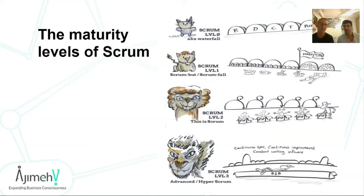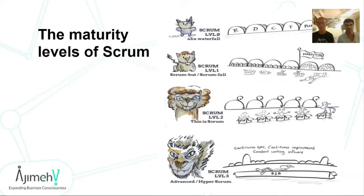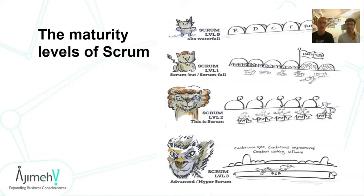Scrum Level 2 is what we call real Scrum. We make a sprint, the whole team works in a cross-functional way, we synchronize during the sprint, and at the end we produce a potentially shippable product. Each recurring sprint we produce a bigger or more complete increment until the MVP is ready to ship to a client. The highest level — advanced Scrum or hyper-Scrum — we won't cover in this session, but we highly advise you to pursue it.